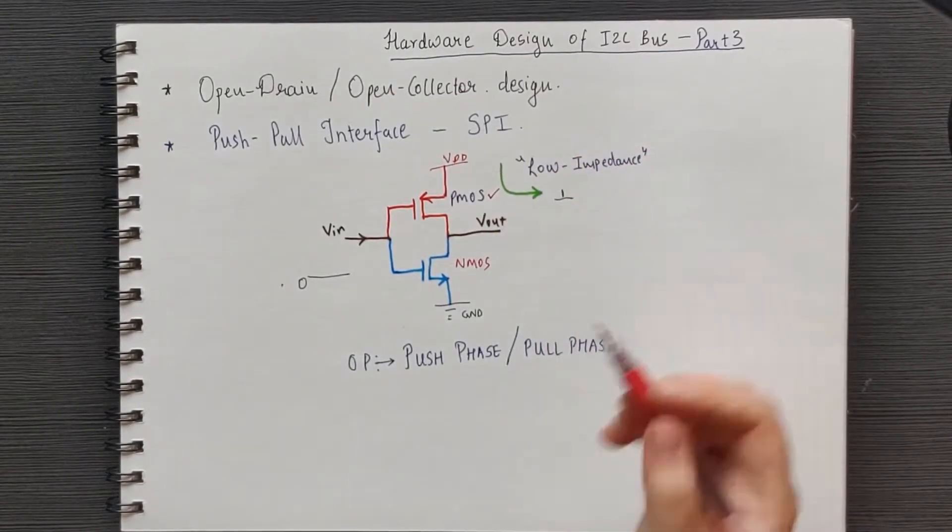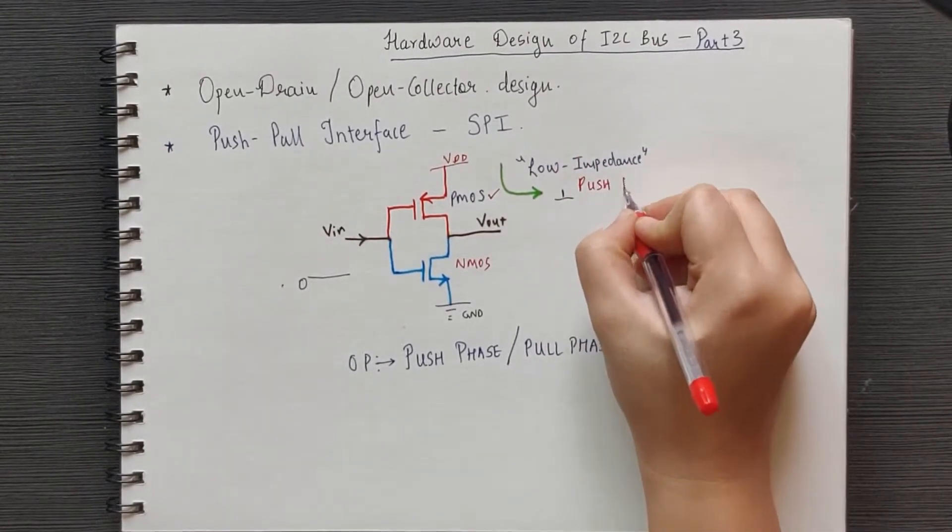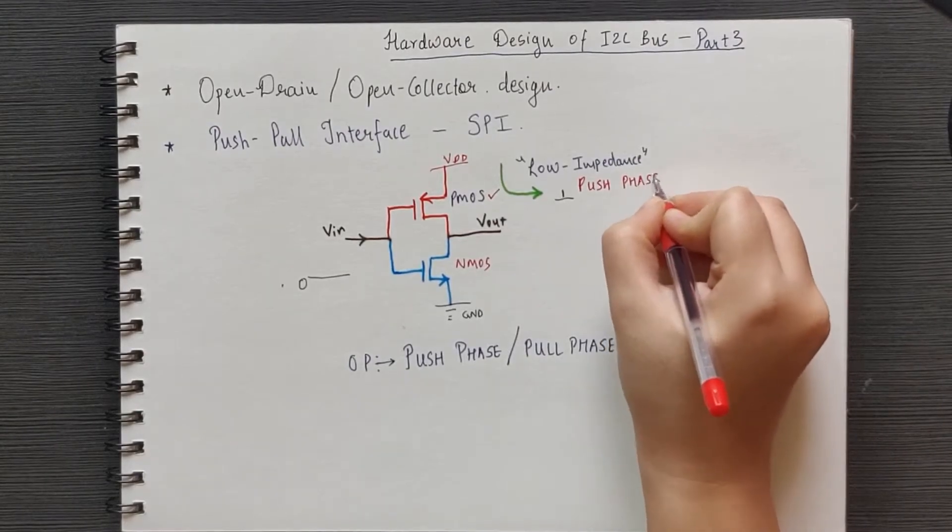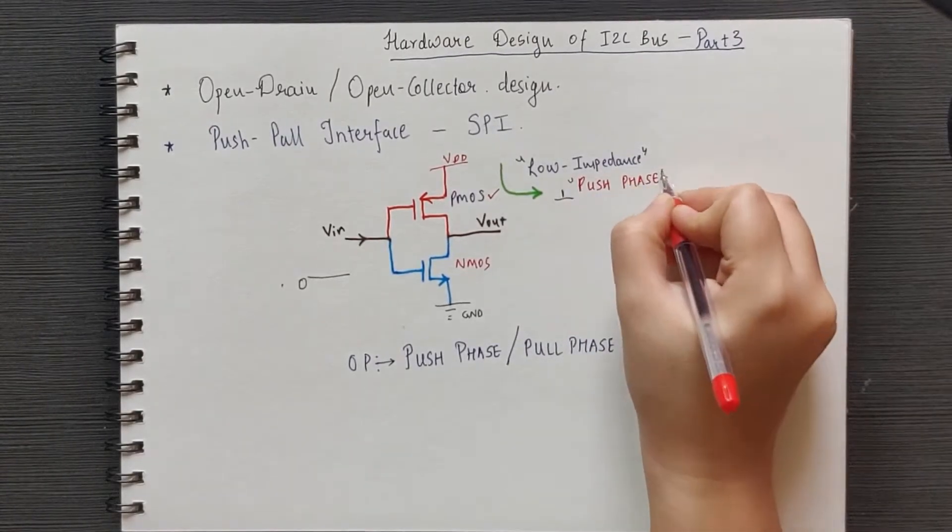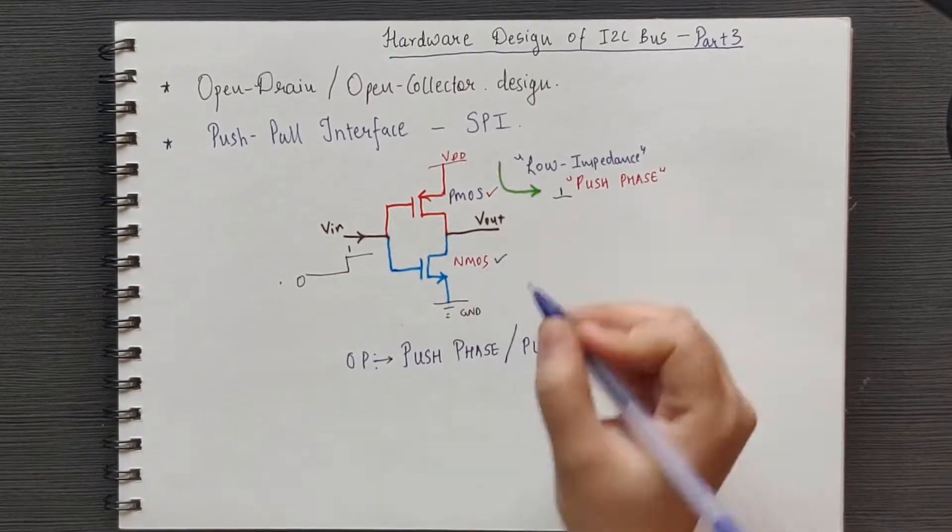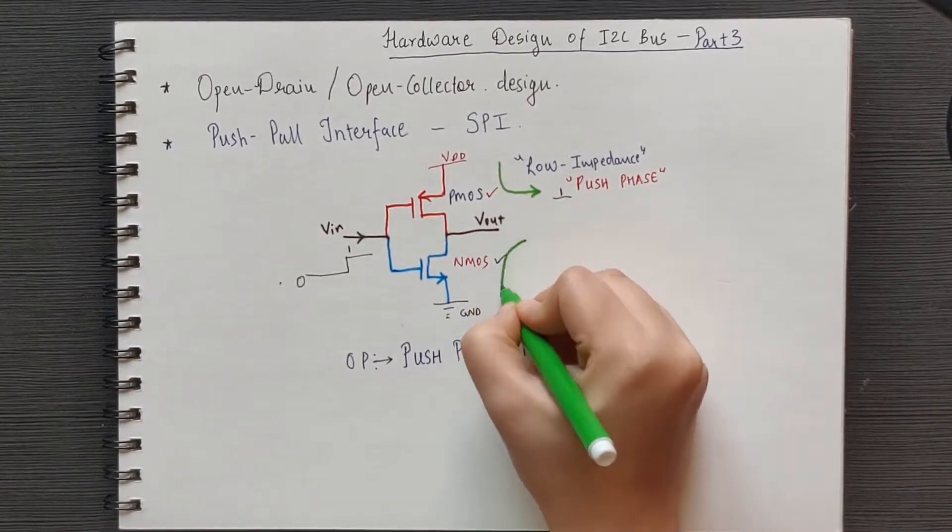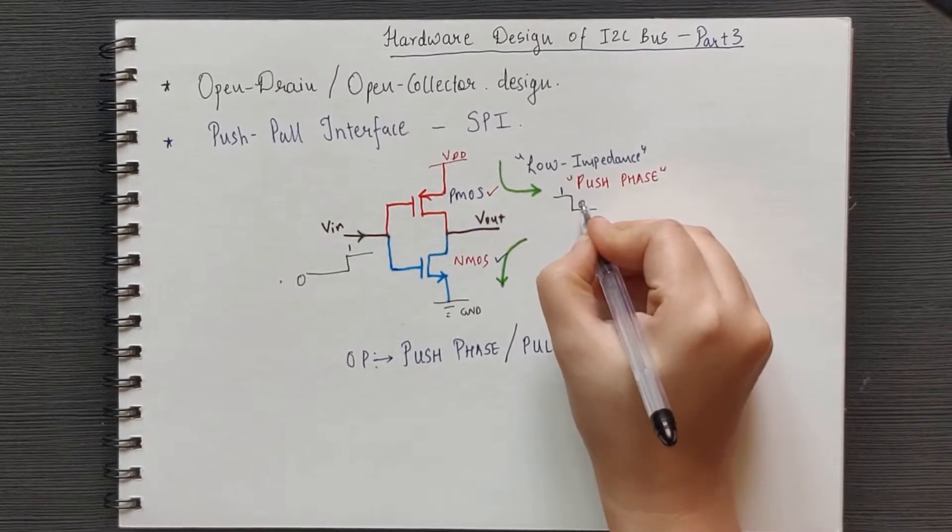Thus, the output has a low impedance connection to VDD. This is nothing but the push phase. If the input is at logic high, the NMOS is on, the PMOS transistor is off.